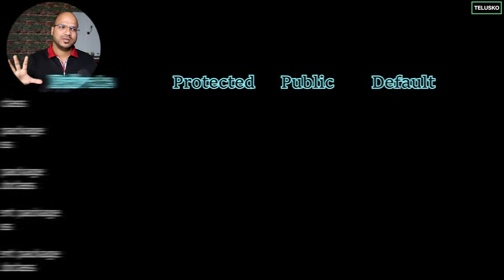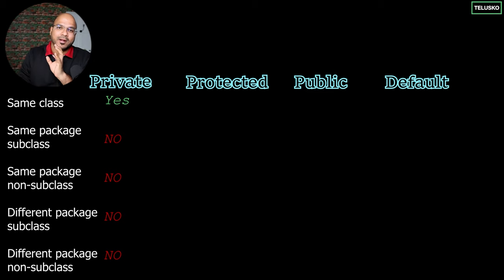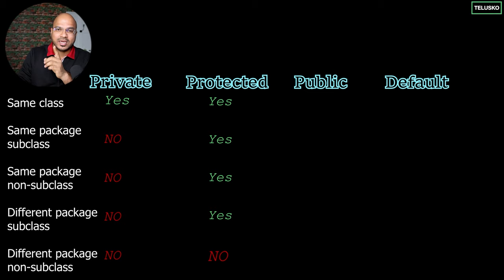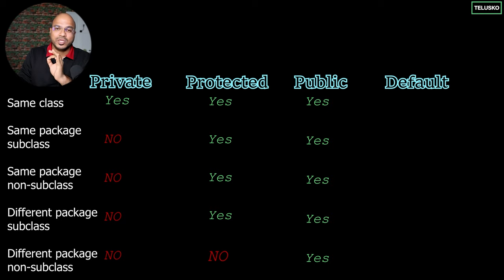Looking at this summary image: private can be used in the same class only. Protected can be used in the same class, in the same package, and in other packages but only in subclasses. Public can be used everywhere. Default can be used in the same package. It's that simple.